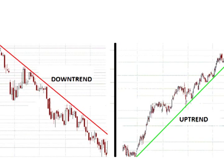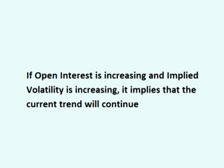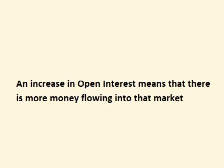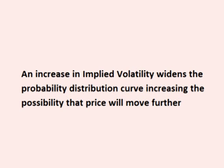Let's look at using option open interest if the price of the stock or ETF is in an uptrend or is in a downtrend. If open interest is increasing and implied volatility is increasing, it implies that the current trend will continue. An increase in open interest means more contracts for that stock or ETF, which means more money flowing into the market. An increase in implied volatility means that the market is stating that there is an increased possibility that price will move further from its current location.